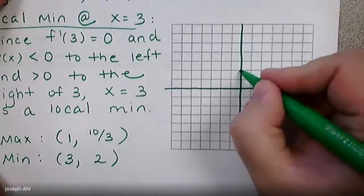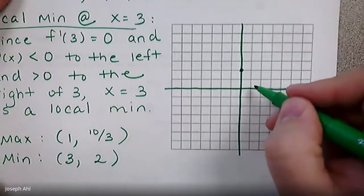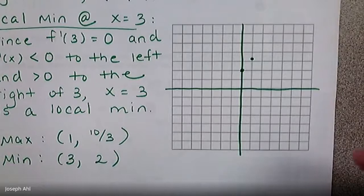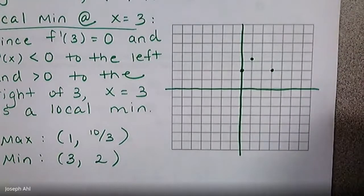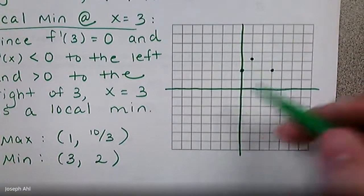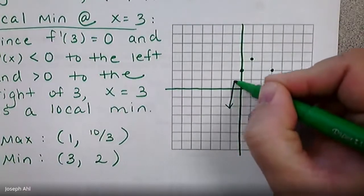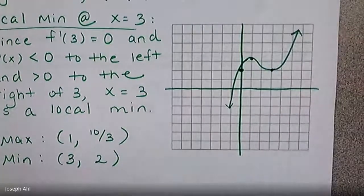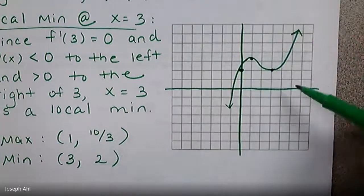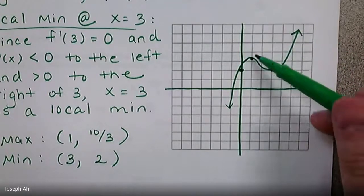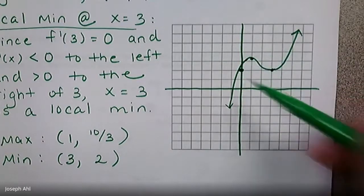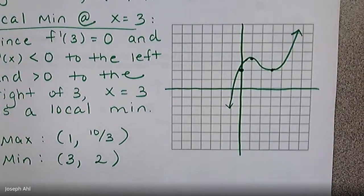So we've got (0, 2) as our y-intercept, (1, 10/3) as our local max, and (3, 2) as our local min. Based on the end behavior, we'll have at least one real root — which we must for a cubic. It looks like we'll have one real root and two complex roots, given that the local min is above the x-axis and the curve turns around and heads back up. That's an accurate sketch, though I did a bad job going through the y-intercept — you can fix that on yours.